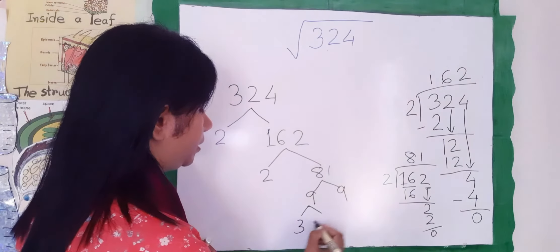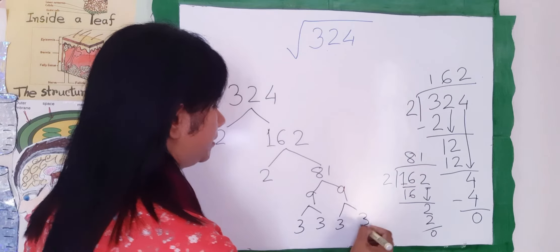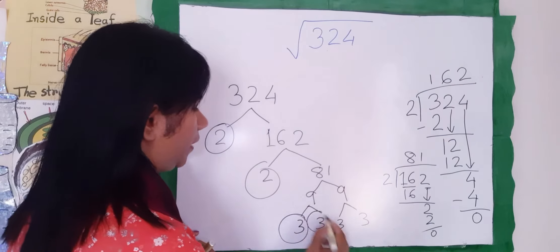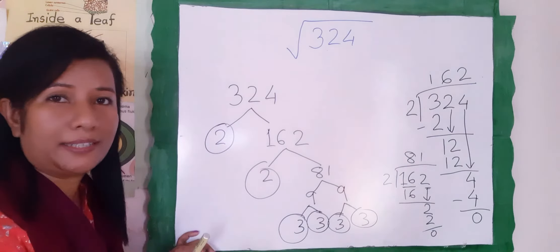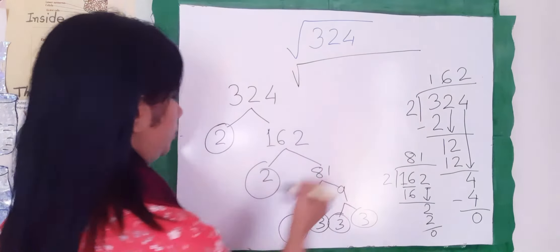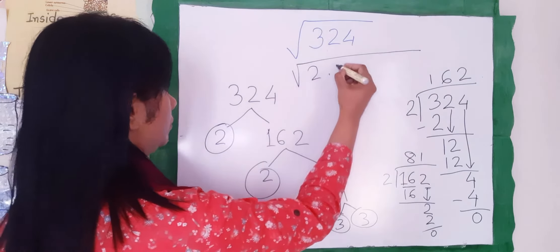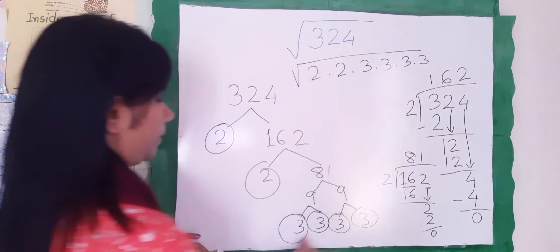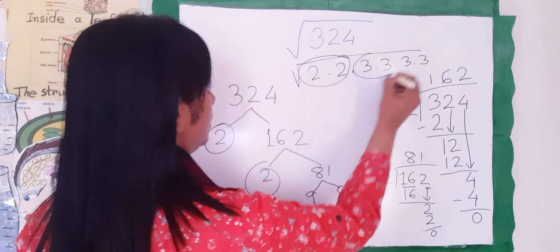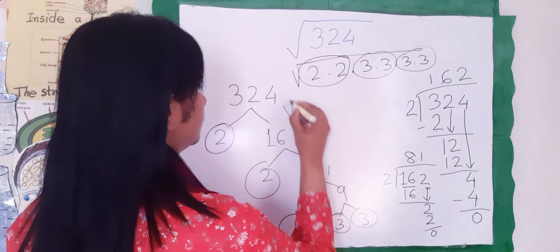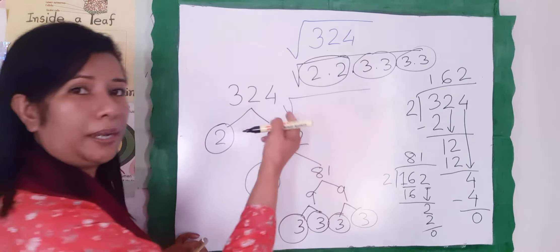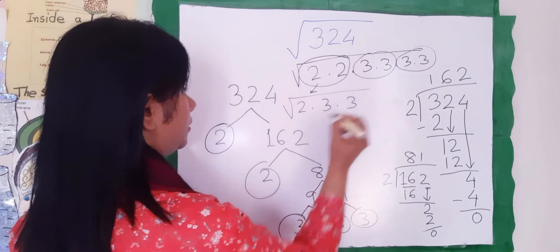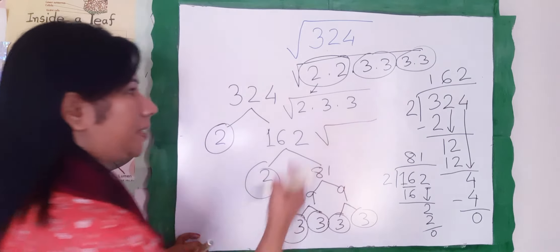Three times three times nine. Now we will go through all the prime numbers — very easy, guys, it just takes practice. Now we'll write all the numbers we got: two, two, three, three, three, three, and three. We will find out the common numbers. We write only the common ones here — three and three. The common number is three times three.